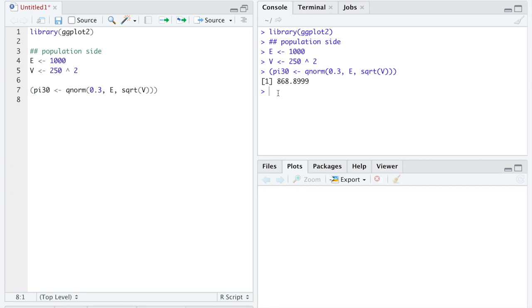So here, π subscript 30 is equal to the SAT score 868.9. The SAT score 868.9 puts 30% of SAT takers below that score.